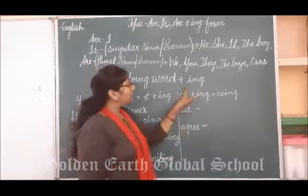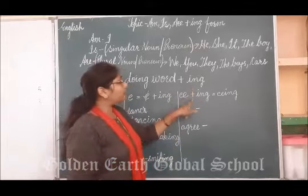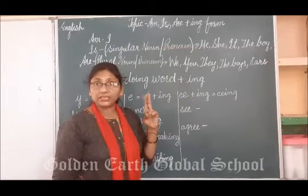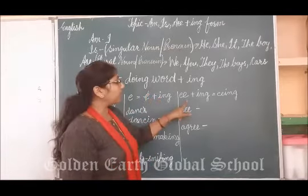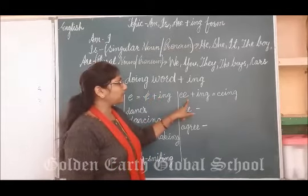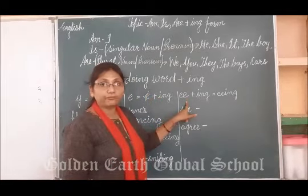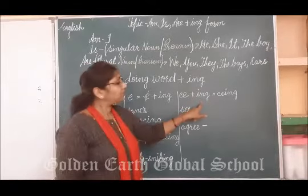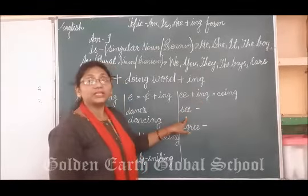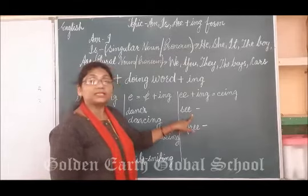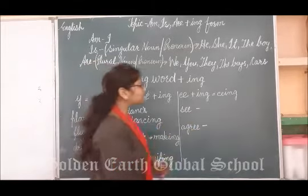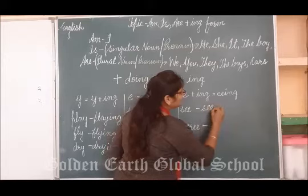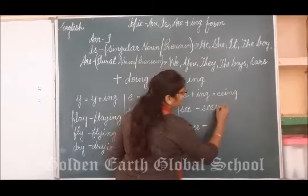And now, if there is any word that ends with double E — E-E — that ends with double E, we do not cut any E from here. We just add -ing with it. For example, see — S-E-E. So how will we write it? Just simply write see and add -ing with it — seeing.